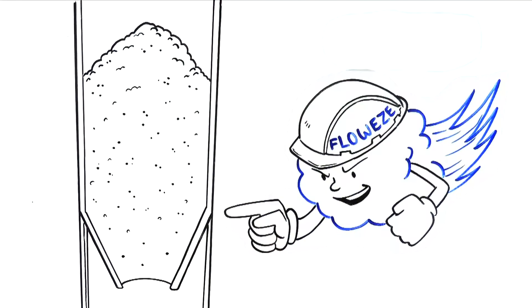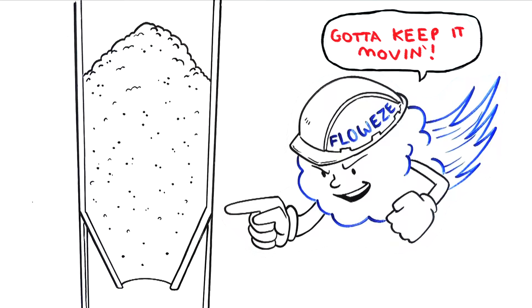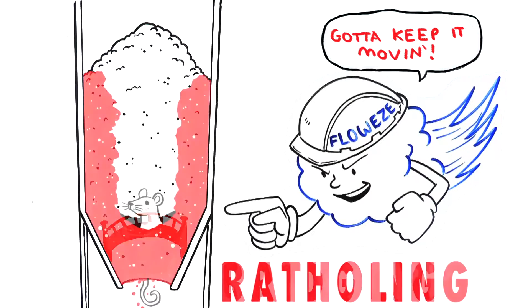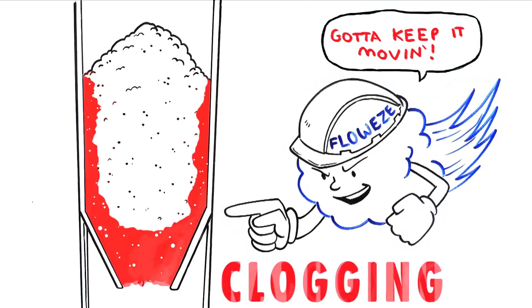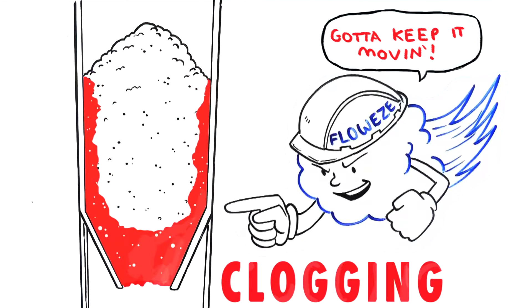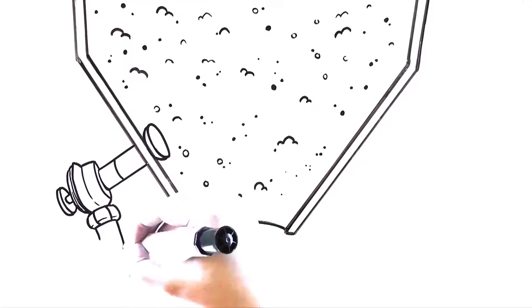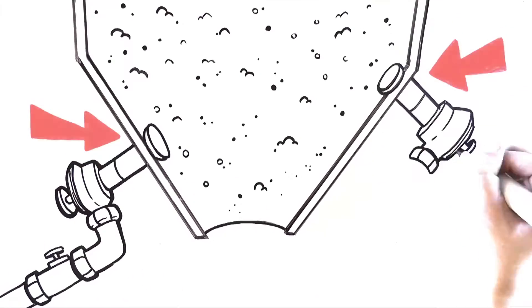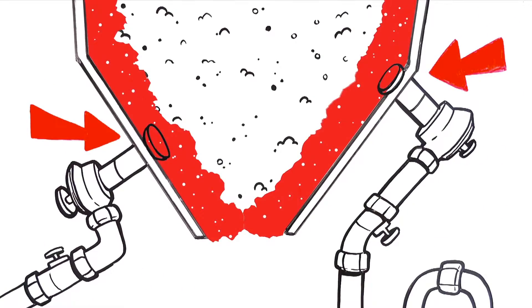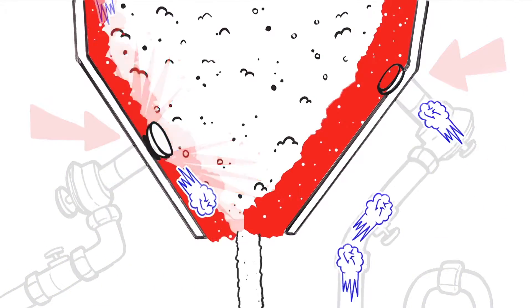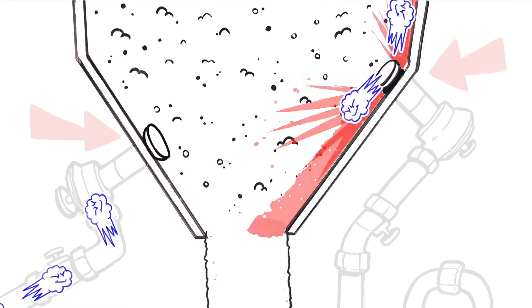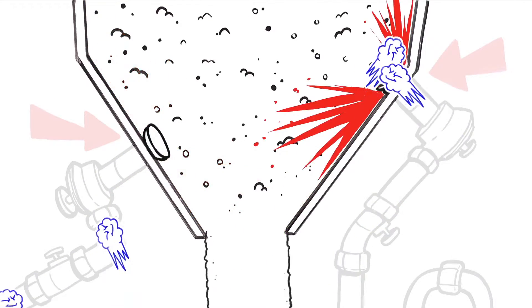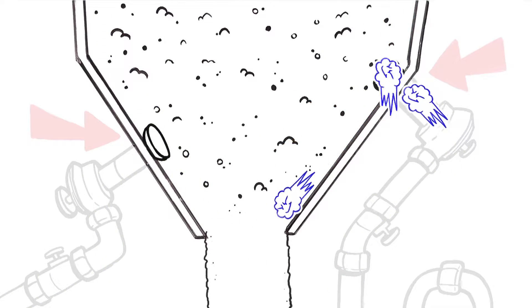The AirSweep blasts compressed air along the vessel wall to eliminate bridging, rat holing, and clogged material to keep it moving. Usually AirSweep nozzles are installed around the lower walls and bottom of the vessel to be flushed. The nozzles are pulsed in sequence to activate and lift sections of material off the walls and sweep it out of every nook and cranny.